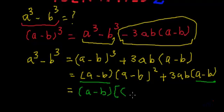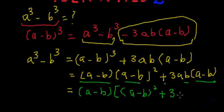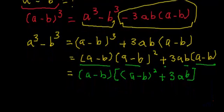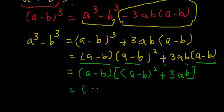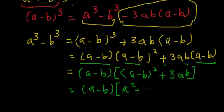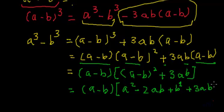So we can take a minus b out as a common factor. We will be left with a minus b whole square plus 3ab. Now let's solve this further — I'll expand a minus b whole square inside the bracket, which is equal to a square minus 2ab plus b square, and then we have plus 3ab.